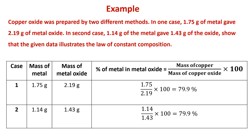Let's try to understand this law with an example. Copper oxide was prepared by two different methods. In one case, 1.75 grams of metal gave 2.19 grams of metal oxide. In the second case, 1.14 grams of the metal gave 1.43 grams of the oxide. Show that the given data illustrates the law of constant composition.